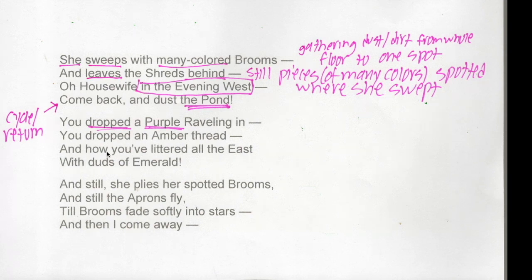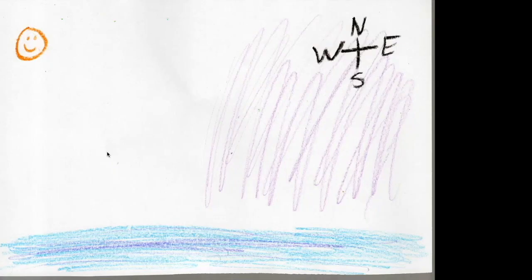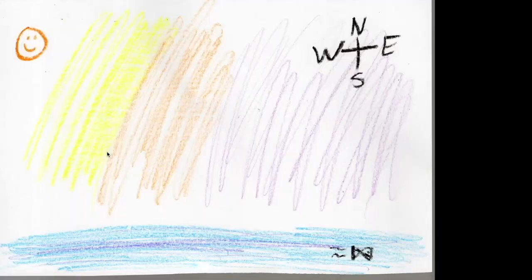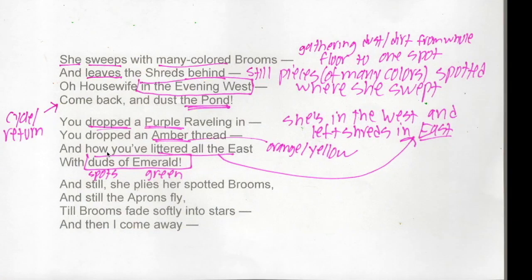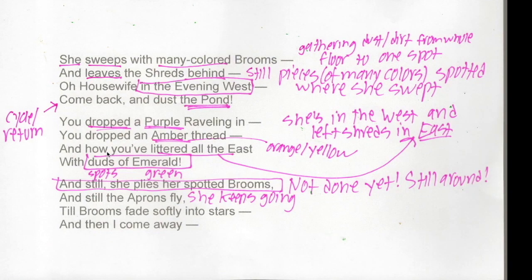You dropped a purple raveling in — she's in the west and has left shreds behind in the east, so I drew in some purple. You dropped an amber thread — amber is an orange-yellowish color, so I filled in some orange and yellow going from east to west. With duds of emerald — 'duds' means spots, and emerald is green, so now I'm drawing in some dots of green. And still she plies her spotted brooms — she's not done yet. And still the aprons fly — lots of movement and lots of color still happening.